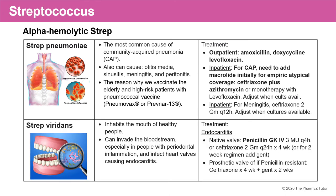The second alpha-hemolytic strep is Strep viridans. Strep viridans inhabits the mouth of healthy people, but in people who have periodontal inflammation it can get into the bloodstream and infect the heart valves, causing endocarditis. Strep viridans is exquisitely sensitive to penicillin, so we use Penicillin G 3 million units every 4 hours. Alternatively, ceftriaxone 2 grams every day can be used — usually prolonged therapy for 4 weeks. For prosthetic valve endocarditis, we also need to add gentamicin for a couple of weeks.